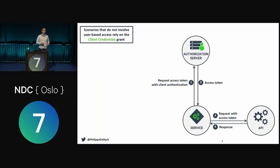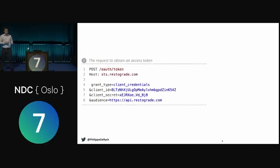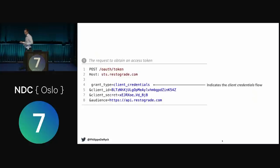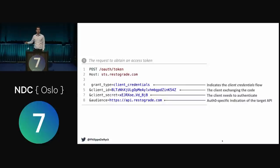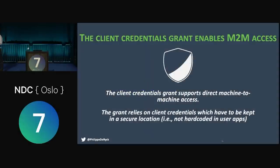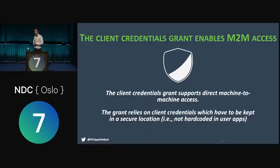A request like this would look as follows: a call to the token endpoint on the authorization server with grant type 'client_credentials,' the client ID, the client secret, and in this case an audience — that's an Auth0-specific thing. Client credentials grant for machine-to-machine access — that's one of the first takeaways for this session. It's still today a current best practice, still present in the OAuth 2.1 spec.